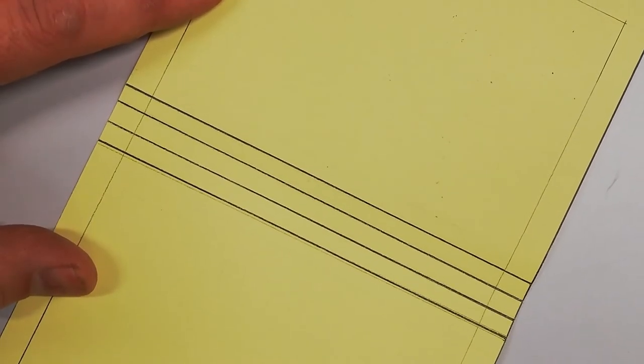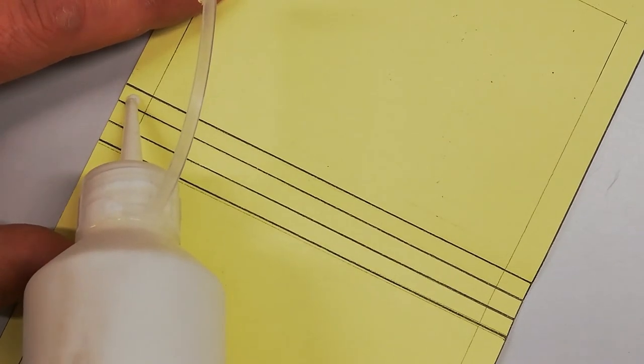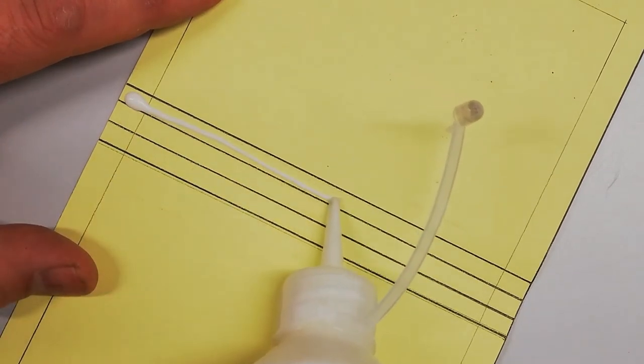Now we're going to apply some PVA glue to the area that's going to stick on the spine, but don't put too much PVA glue on.